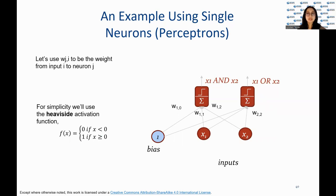Now we present an example of using single neurons or perceptrons to perform binary classification. The weights between each input and neuron are represented as w_j,i. For simplicity, the heaviside activation function is used in this example. The goal is to train the network to correctly classify input instances based on their features.